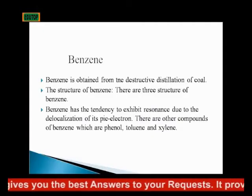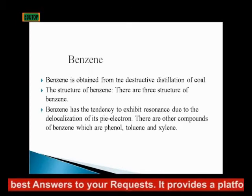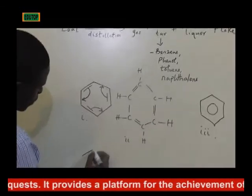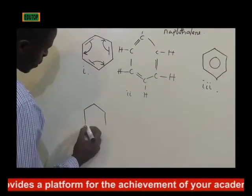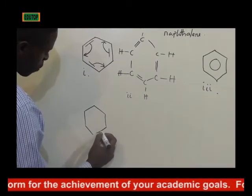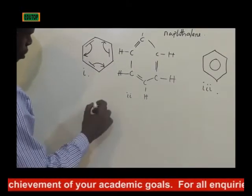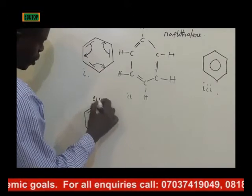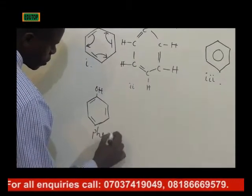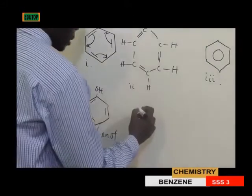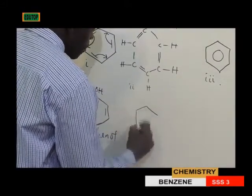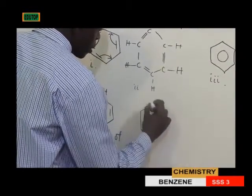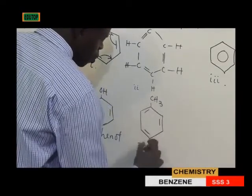Other compounds of benzene are phenol, toluene, and xylene. When you talk about phenol, phenol is a benzene ring with the attachment of OH — this is phenol. Then toluene is also a benzene ring with the attachment of CH3. This is toluene.